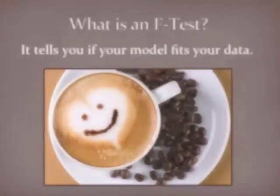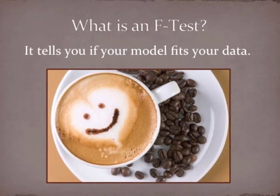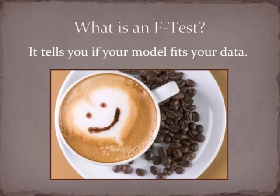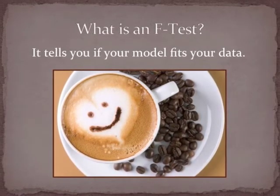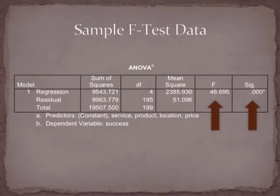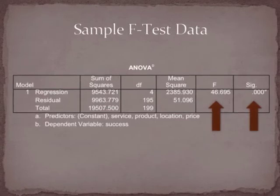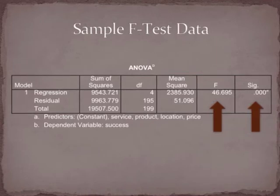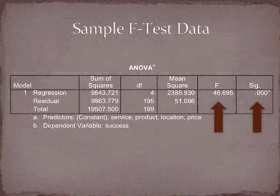If Carlos inputs his data and runs the regression in a statistical software program, part of the output would include an F-test. The model looks nice and seems to make sense, but the F-test helps determine if the model really makes sense for the data Carlos has collected. For example, our null hypothesis is that none of the four suspected factors — quality of service, product, location, or price — have an impact on the success. However, Carlos's F-test shows otherwise. It shows a significant correlation at the 0.01 level.